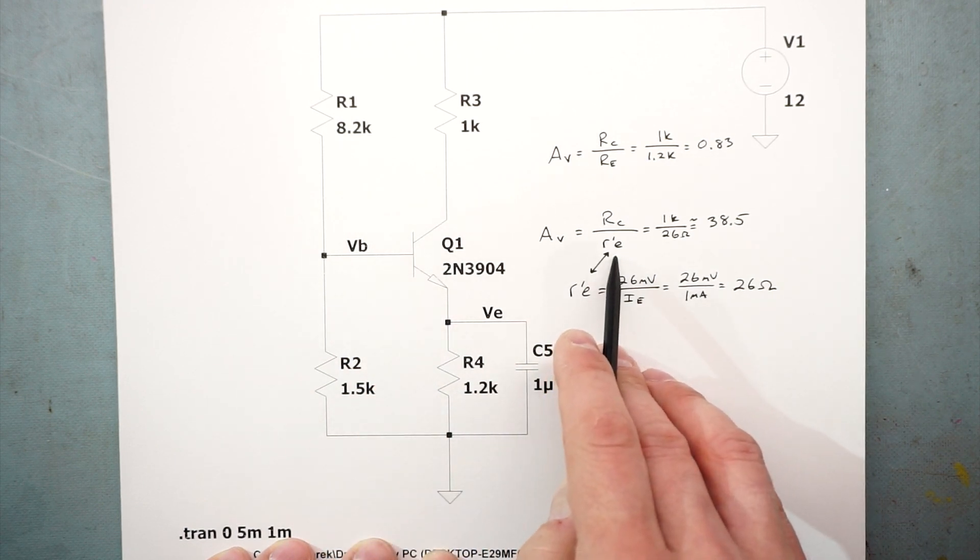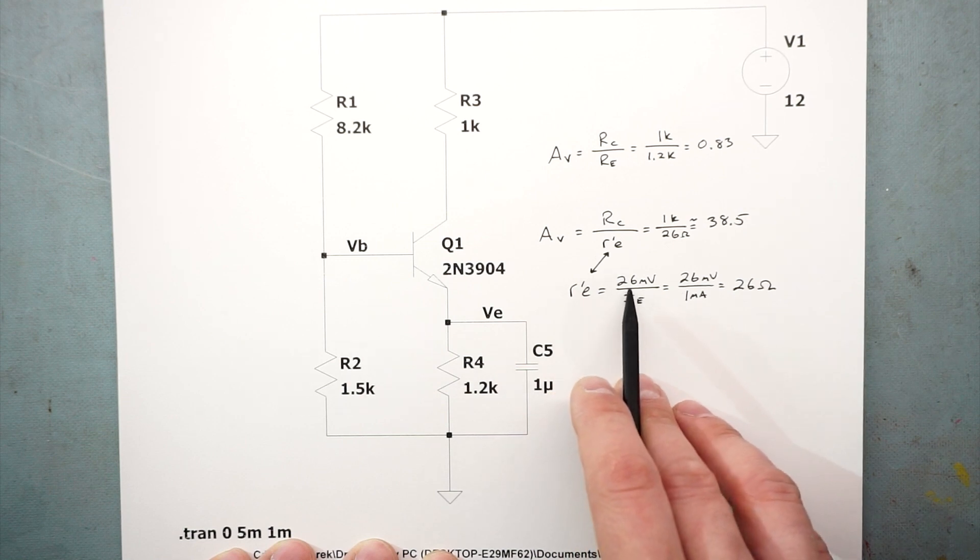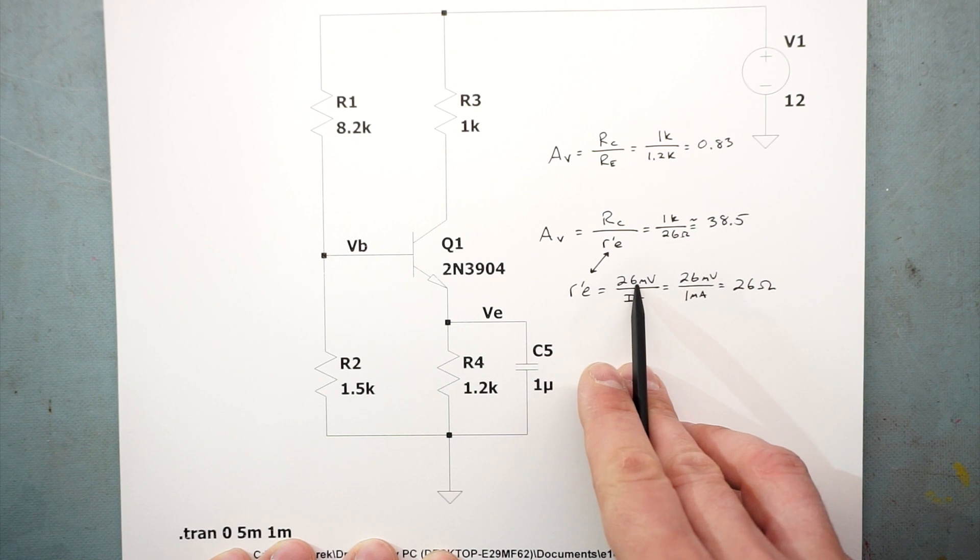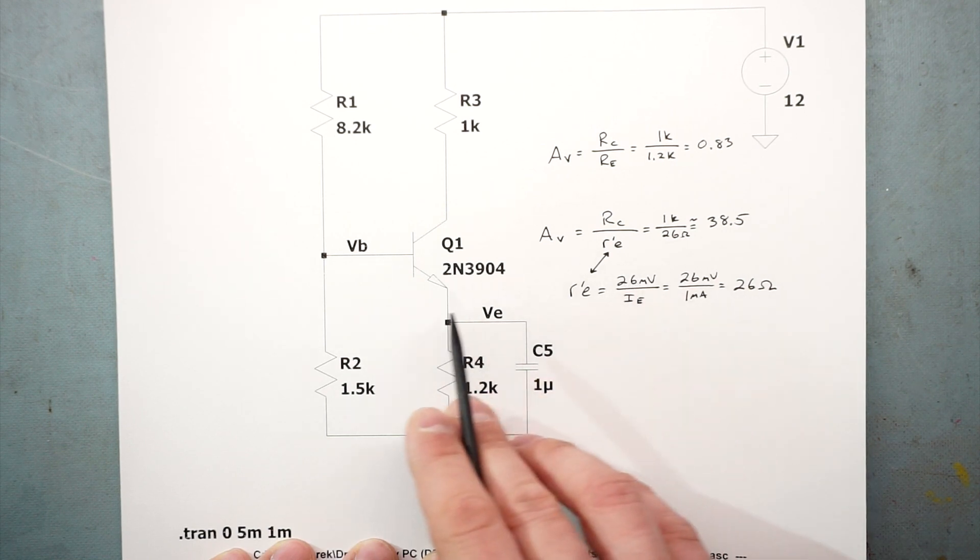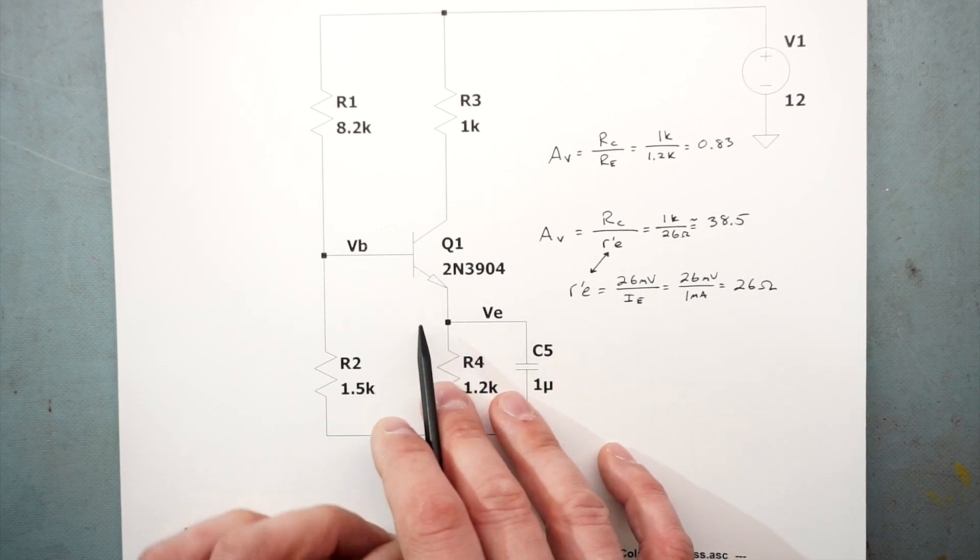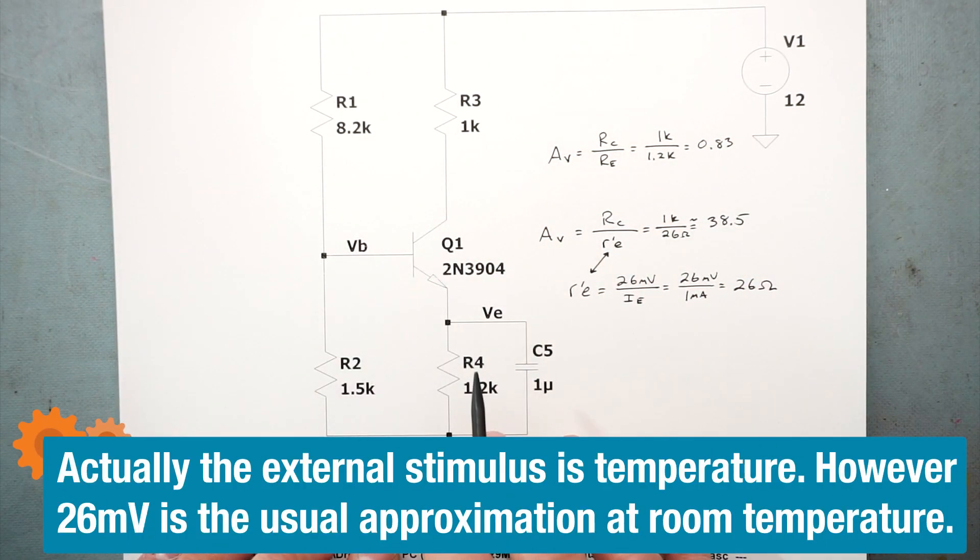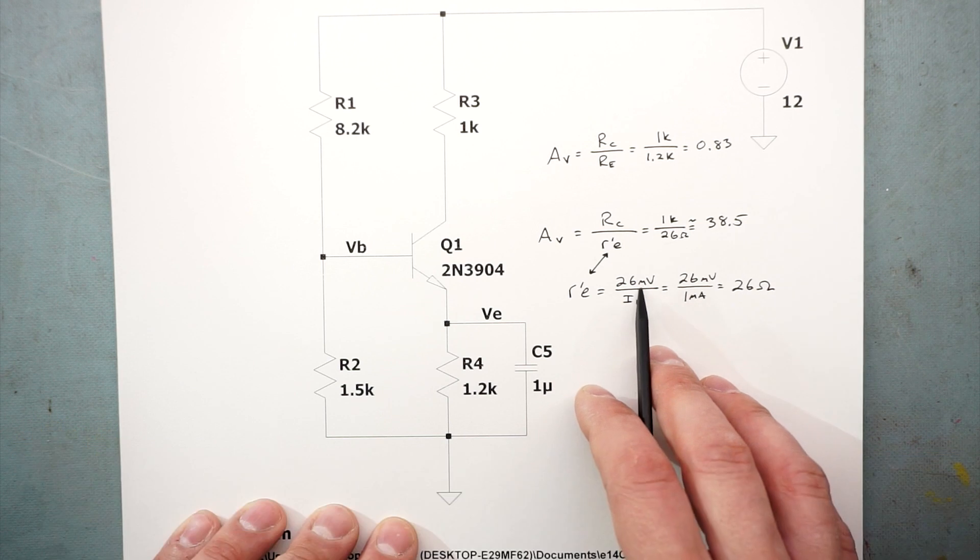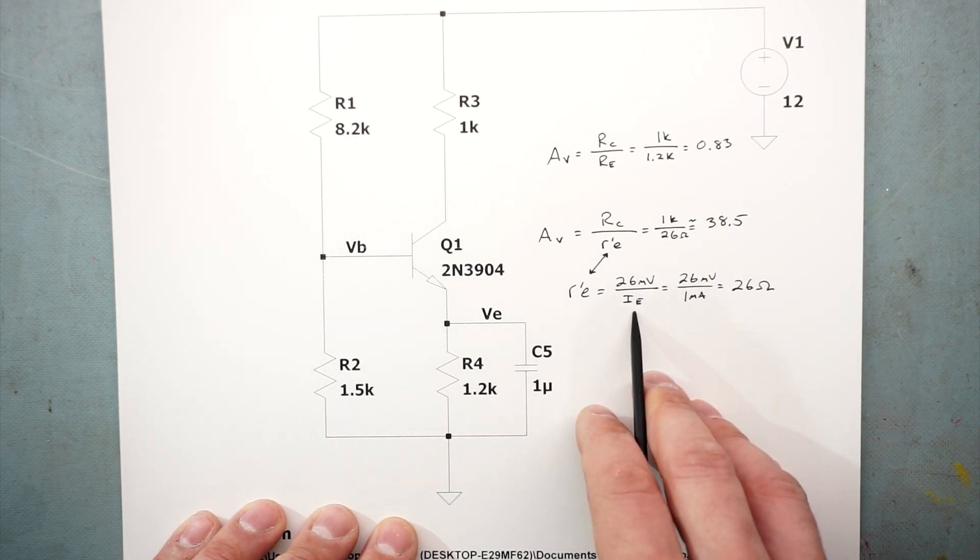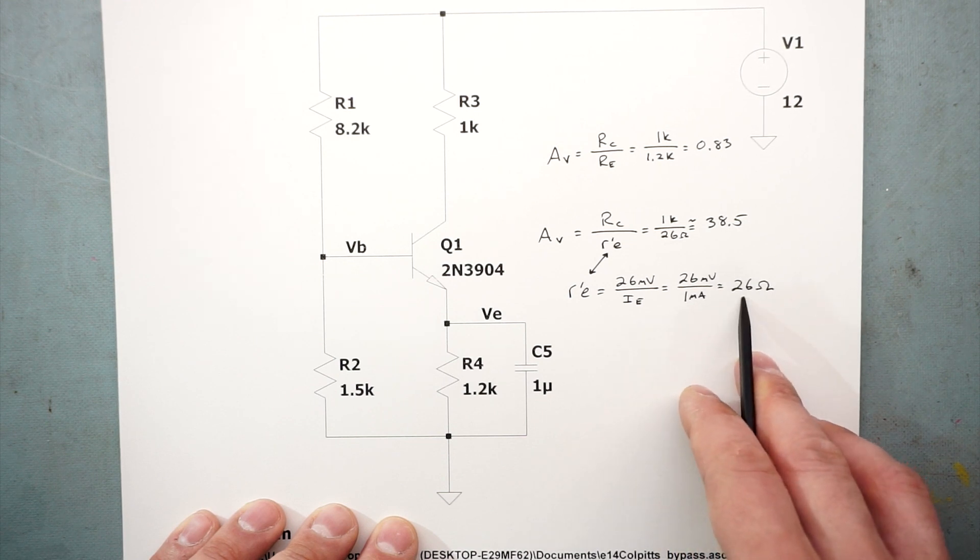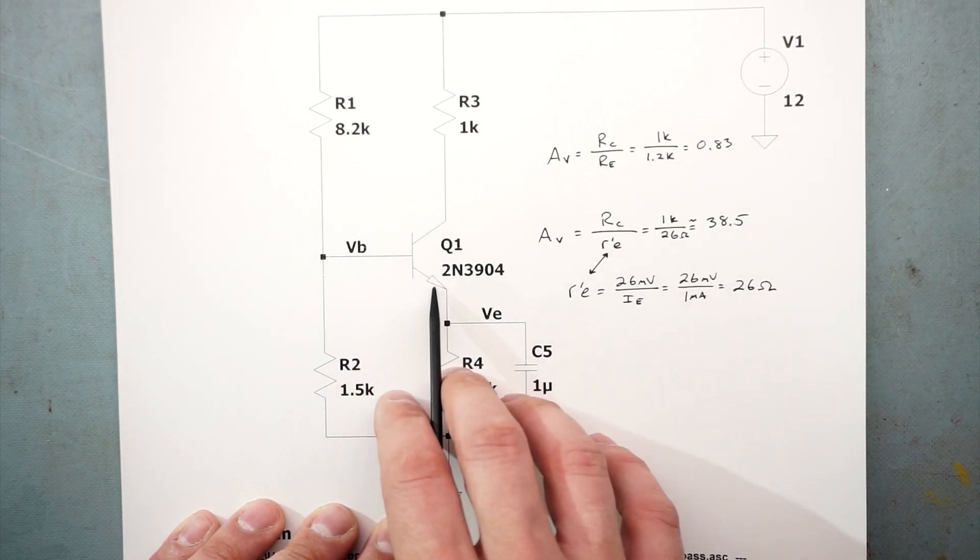R'E is the thermal voltage, which is 26 millivolts divided by the emitter current. This thermal voltage comes from any PN silicon junction as the electrons are wiggling around inside the substrate, and that actually produces a voltage without any external stimulation, just on its own. Through some fancy math and physics that I'm not going to go into today, that value is 26 millivolts at room temperature divided by the emitter current.